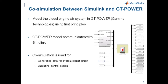We built our diesel engine model in the GT Power simulator using first principles, and we use the Simulink interface provided by GT Power to allow the Simulink model to communicate with GT Power — to drive the plant and collect measurements. This co-simulation can be used for many tasks: generating data for system identification and validating the MPC controller after design and implementation in Simulink.